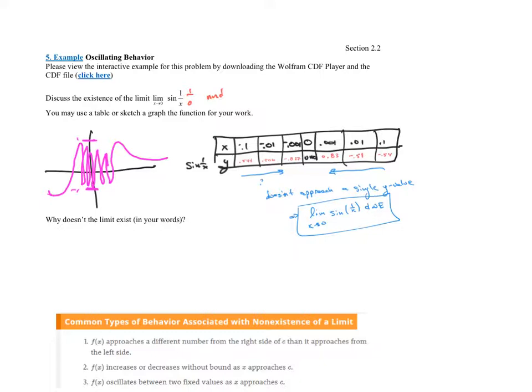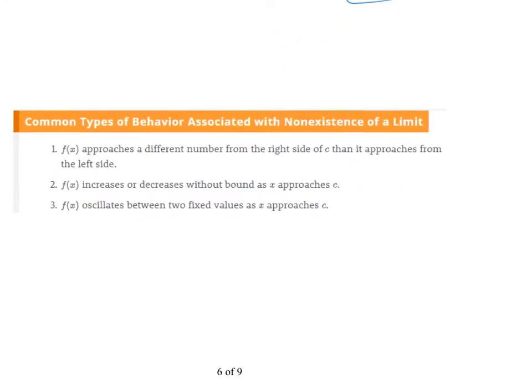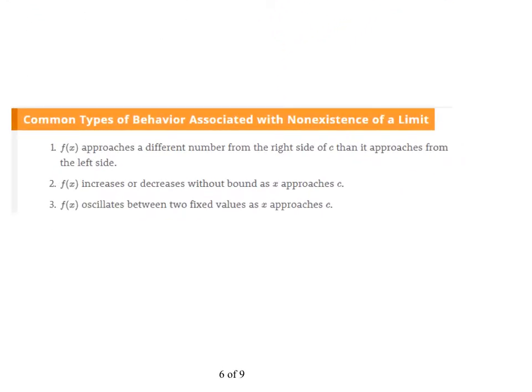Let's look at this. It says common types of behaviors associated with non-existence of a limit. f of X approaches a different number from the right side than it does from the left side. This was like the absolute value of X over X, from the left it was negative 1 and from the right it was 1.